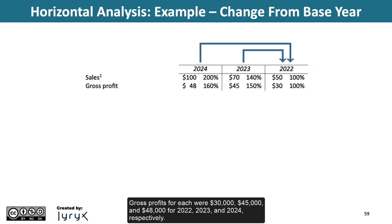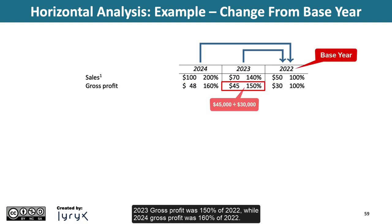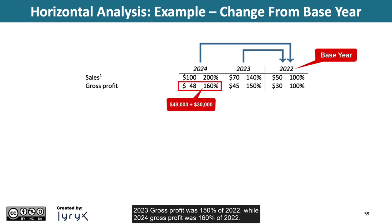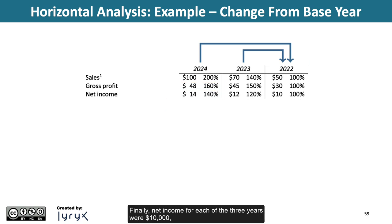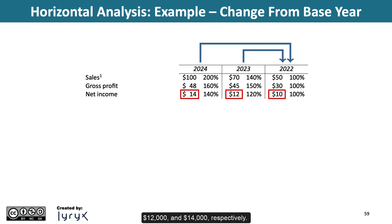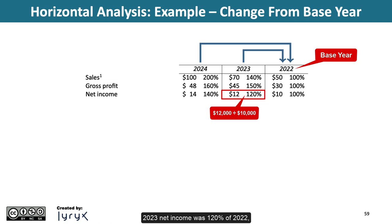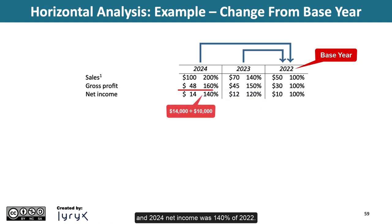Gross profits for each year were $30,000, $45,000, and $48,000 for 2022, 2023, and 2024, respectively. 2023 gross profit was 150% of 2022, while 2024 gross profit was 160% of 2022. Net income for each of the three years were $10,000, $12,000, and $14,000, respectively. 2023 net income was 120% of 2022, and 2024 net income was 140% of 2022.